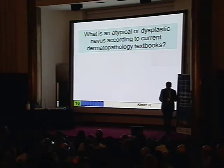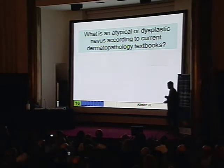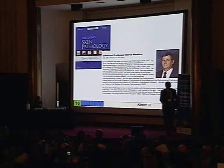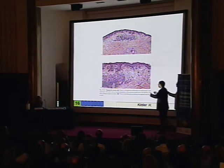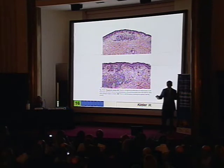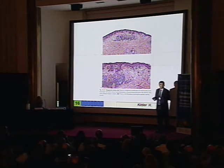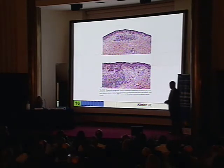What is an atypical dysplastic nevus according to dermatopathology textbooks? Here is the most famous textbook in dermatopathology by David Weedon, an Australian dermatopathologist, and he shows us this lesion. What is it? According to my opinion, it's a compound nevus, congenital type. This is the most typical dysplastic nevus according to the most famous textbook of dermatopathology.